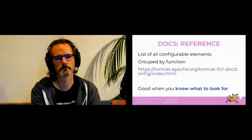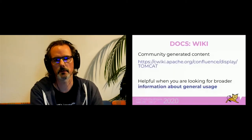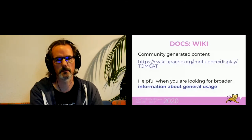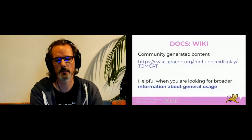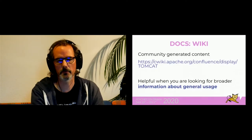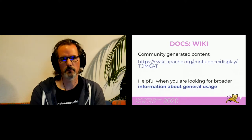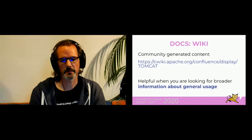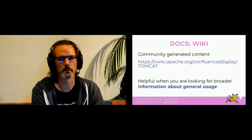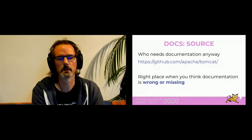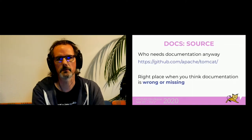The wiki is community-generated content. Everyone can edit it after registering on the wiki page. It's mostly a bit broader than the other documentation sources, but it's helpful and has a lot of information, and you can make it better if you want to. The last place on the Tomcat page is the source. Go there when you know there is some feature you've seen somewhere but can't find in the documentation. And best would be to add documentation for any features you found in the source only.